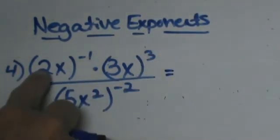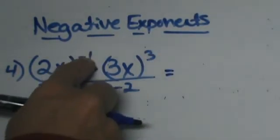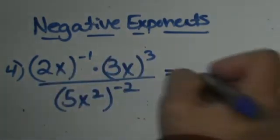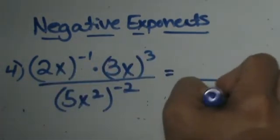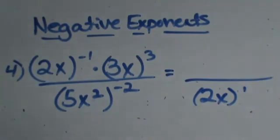I would say 2x to the negative first. That is all one group so it is going to go down. Now it is going to be 2x to the positive first.